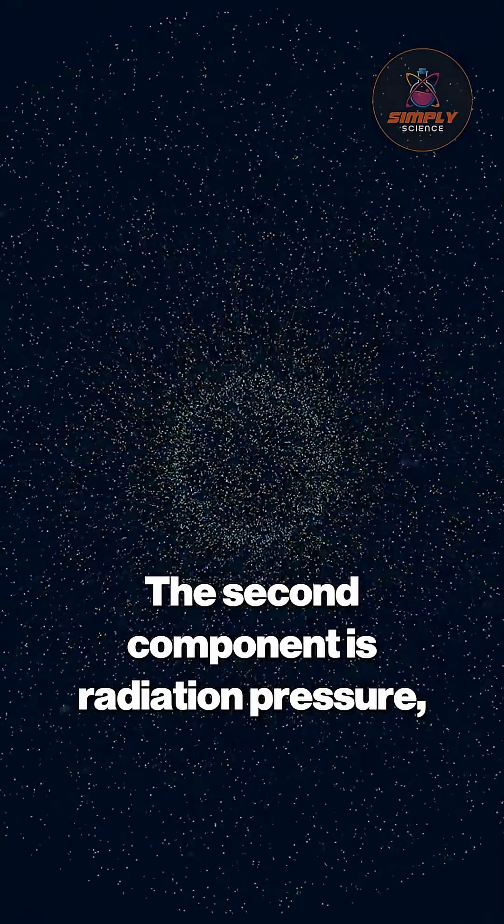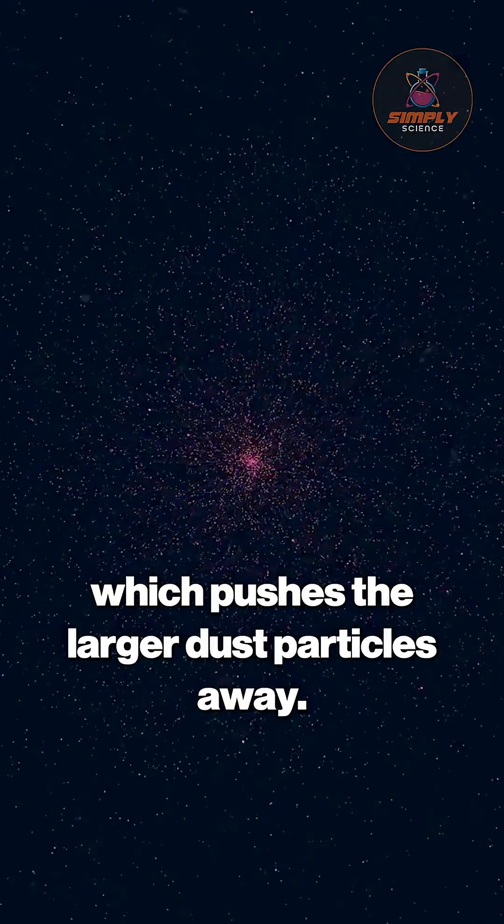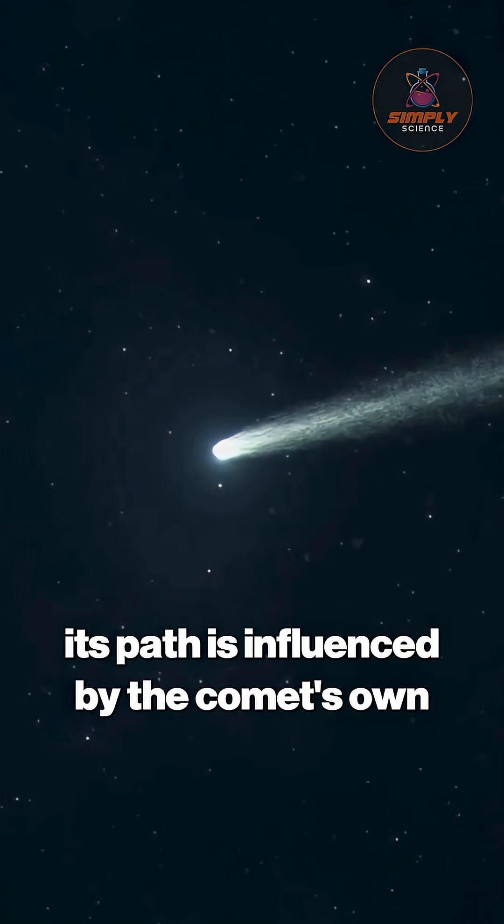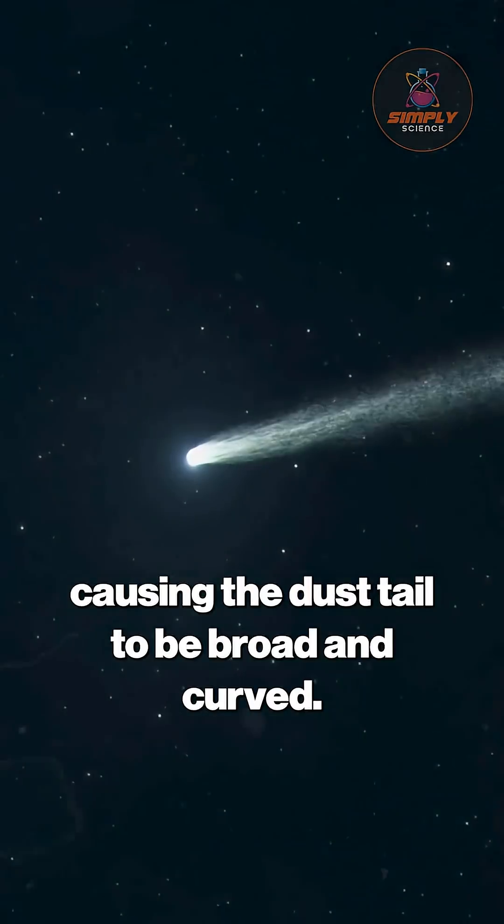The second component is radiation pressure, the gentle but relentless push of photons themselves, which pushes the larger dust particles away. Because the dust moves more slowly, its path is influenced by the comet's own orbital motion, causing the dust tail to be broad and curved.